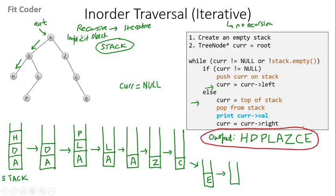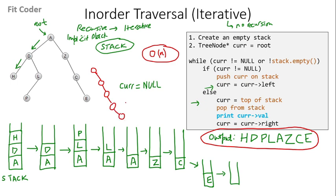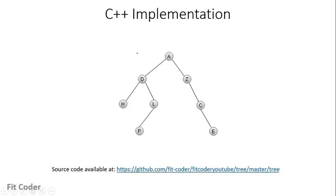The time complexity of this traversal is O(n), where n is the number of nodes. This is because all the nodes can point in one direction, in which case the height will be equal to the number of nodes. So the time complexity of inorder traversal is O(n).